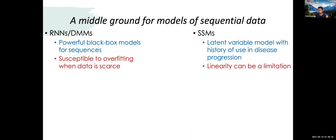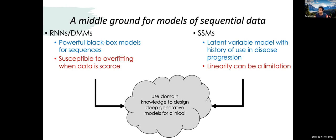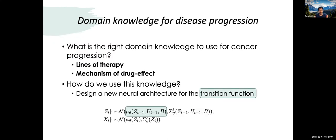Summarizing the modeling choices: recurrent neural networks and deep Markov models are powerful black-box models for sequences but are susceptible to overfitting when data is scarce — which it is, since multiple myeloma is a rare disease. Traditional models like state space models and HMMs are linear with a rich history in disease progression, but the dynamics governing clinical biomarkers are nonlinear. The question we ask: is there a middle ground? Can we use domain knowledge to effectively design deep generative models for clinical data, helping the model generalize better?